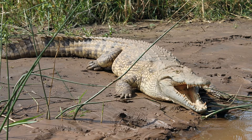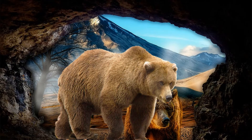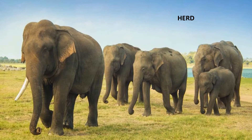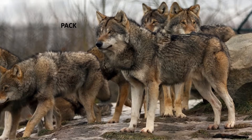A crocodile lives both on land and in water. A bear lives in a cave. How do wild animals live? Some wild animals live in groups. A group of elephants is called a herd. A group of wolves is called a pack.